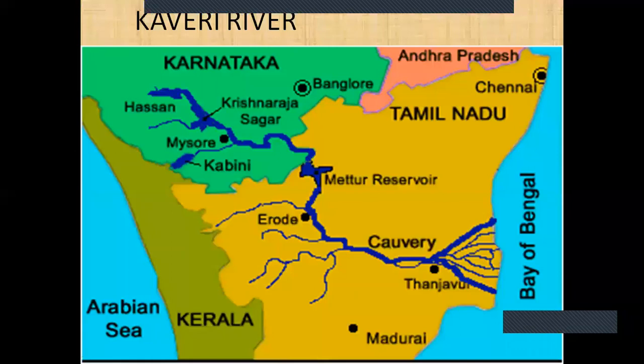Kaveri River. You can see River Kaveri in the image. The Kaveri River covers the states of Tamil Nadu, Karnataka, Kerala, and one Union Territory — Puducherry.